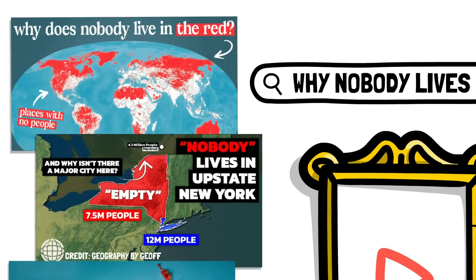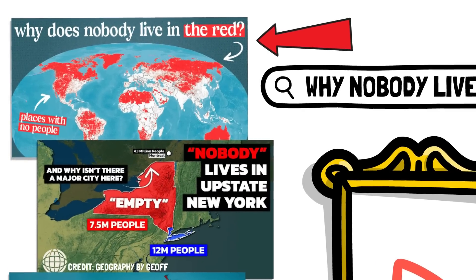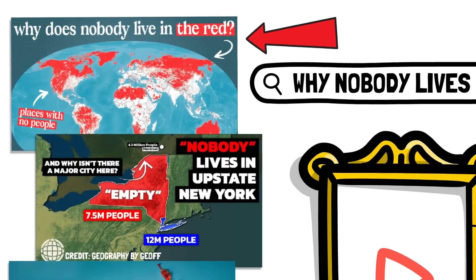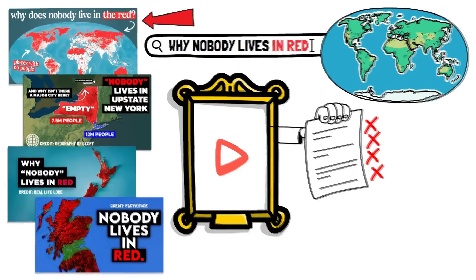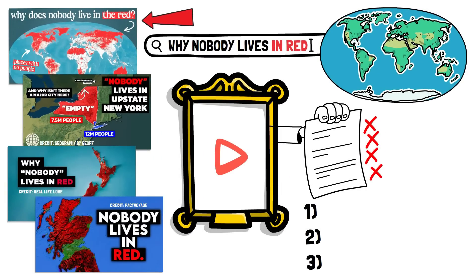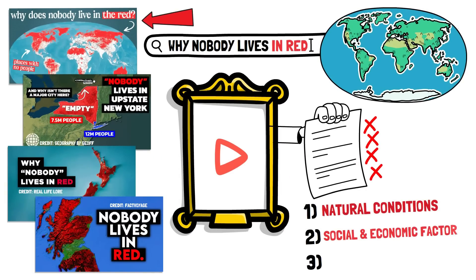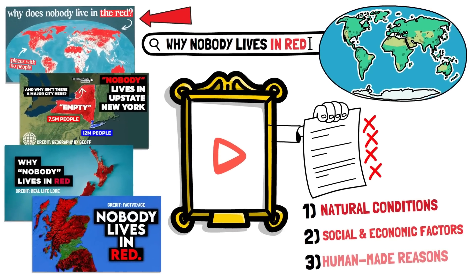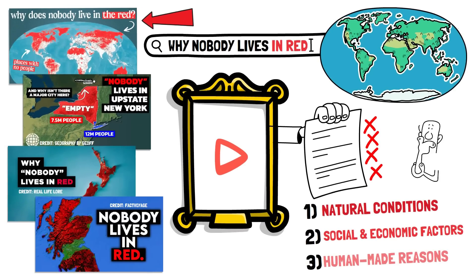Because the image on the thumbnail, or any other map of global population distribution, shows us how a very vast portion of the world is empty. I believe it has to do with three things: first, natural conditions; then the evolution of the way societies and their respective economies work; and third, human-made reasons. So let's find out why.